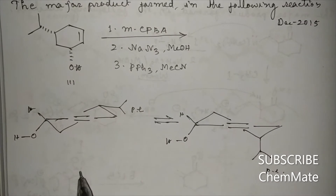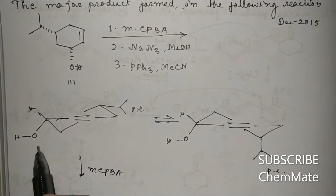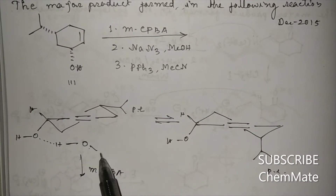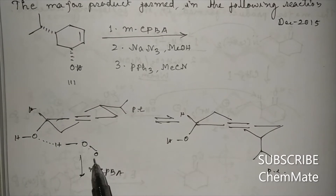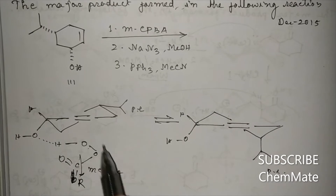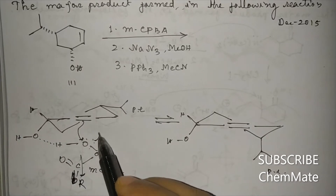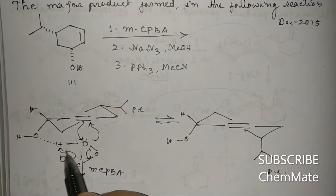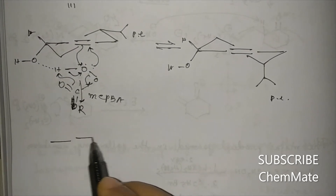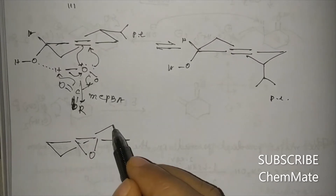When treated with mCPBA, the epoxide will form from below the plane because the OH is below the plane and it will create hydrogen bonding with the peracid. The lone pair attacks via the double bond, and epoxidation takes place from below the plane. The rest of the epoxide structure remains as usual.